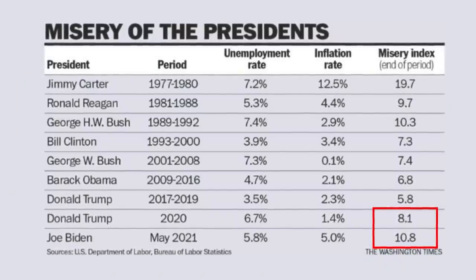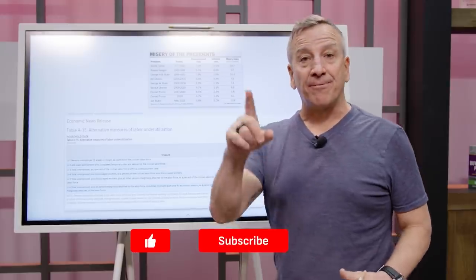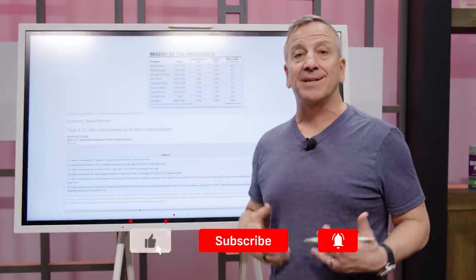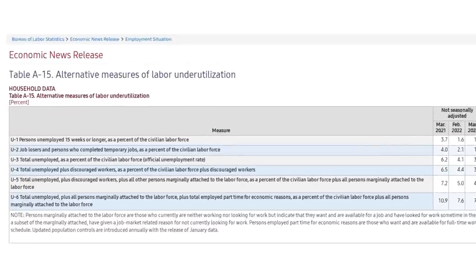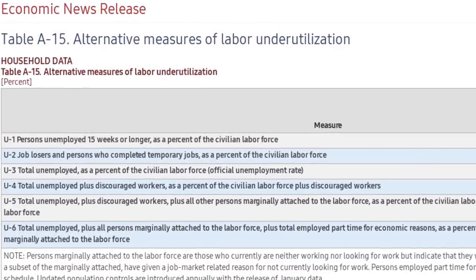Now let's take a look at the first part of the equation, which is labor — employment or unemployment. As you've seen from a previous video, there are several ways that employment gets categorized: U-1 through U-6. This has been around for a long time. The unemployment rate you see in the media is the U-3 report, but the real number is U-6.